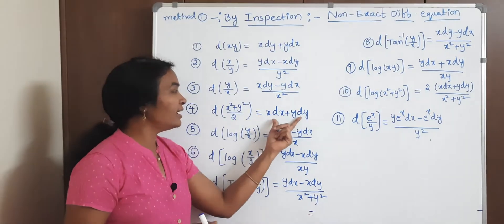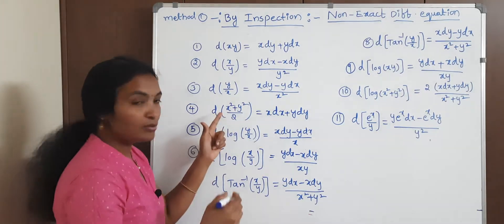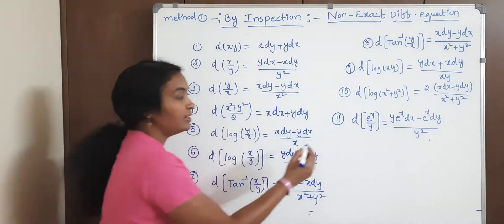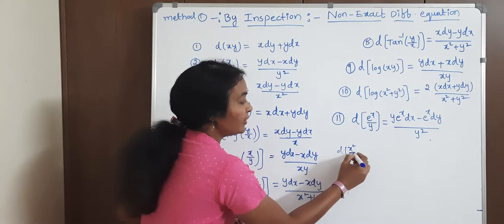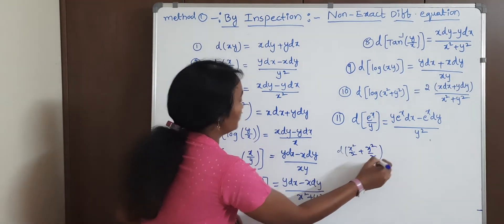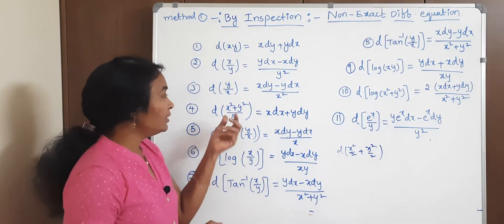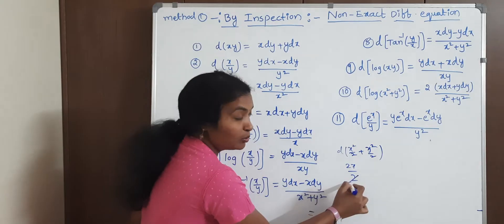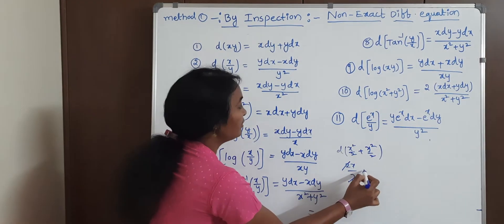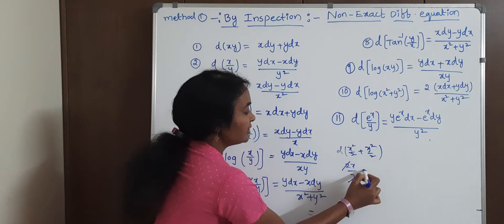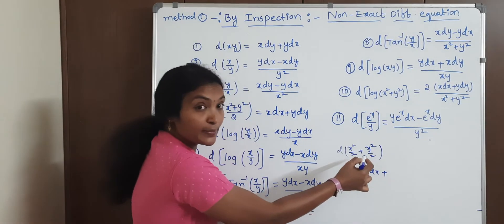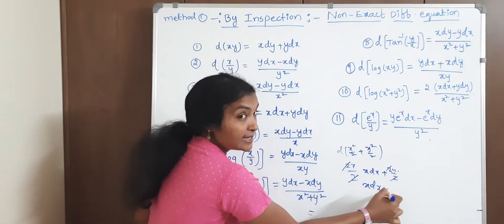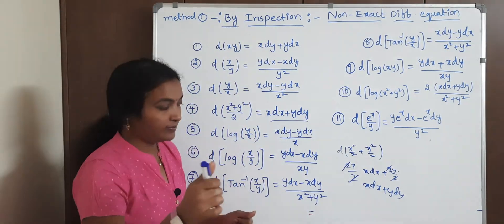Now, you can also write: d(x²/2 + y²/2) = x dx + y dy. Differentiate x²/2: you get 2x/2 — the 2's cancel — giving x dx. Differentiate y²/2: you get 2y/2 — the 2's cancel — giving y dy. So d(x²/2 + y²/2) = x dx + y dy.